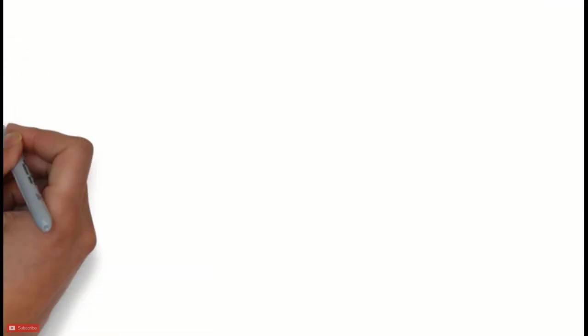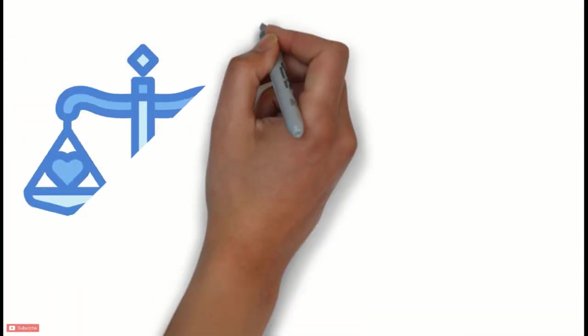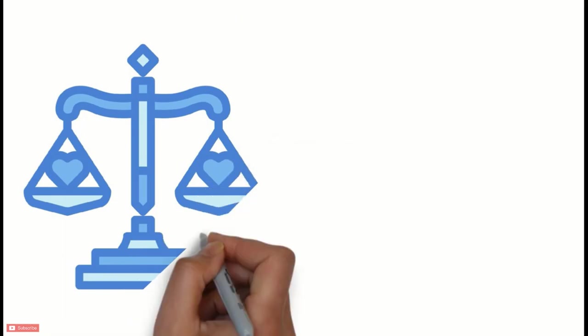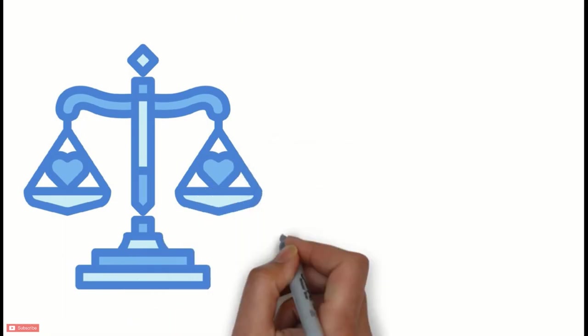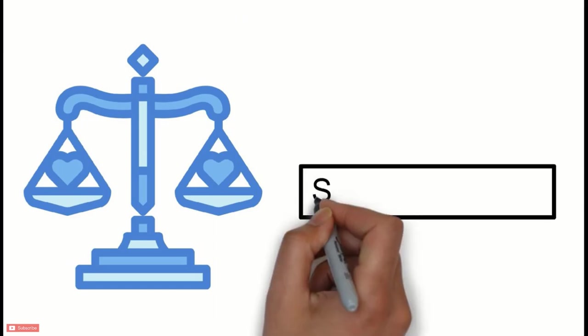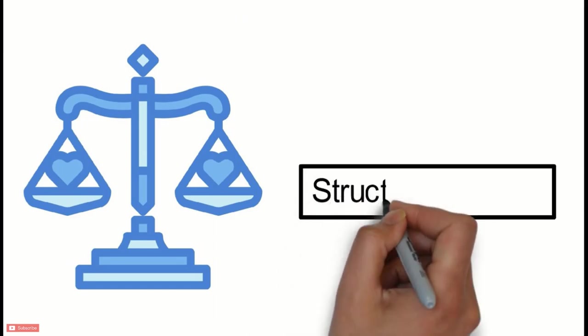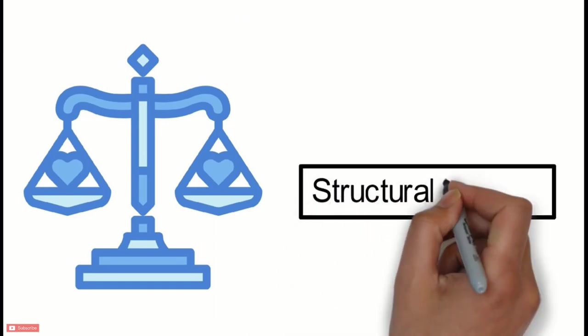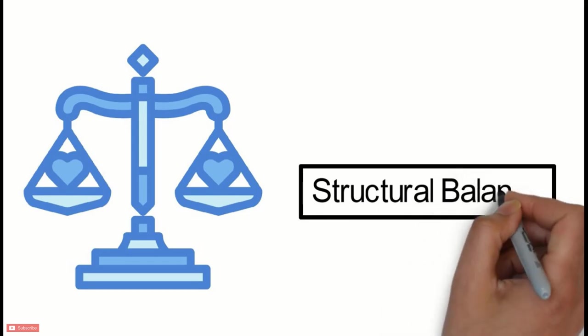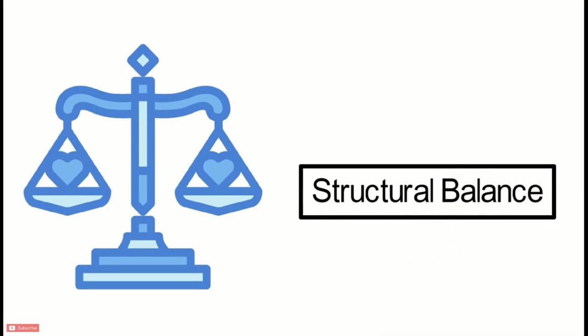Next is structural balance. The recorded jaw relation should ensure a complete structural balance. This includes the correct recording of the orientation, vertical, and horizontal relation. The correct recording of the condyle in relation to the mandibular fossa and the temporal bone is extremely important to ensure correct functioning of the temporomandibular joint and the related muscles.